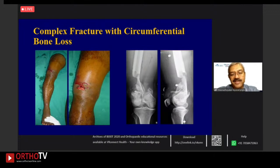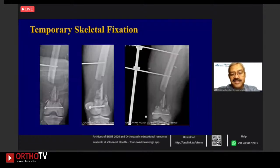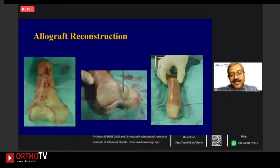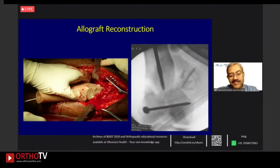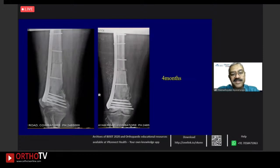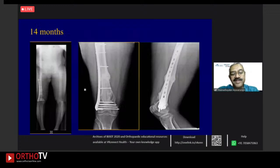For complex fractures with circumferential bone loss, especially with extensive crushing or contamination, do it in stages — first articular reconstruction, then secondary reconstruction. Take allograft, shape it, ream the intramedullary area of the allograft, put autograft inside, position it, and fix it well. At 4 months, callus forms all around; at 14 months, nicely incorporated. This autograft-allograft combination gives good function. In staged reconstruction, be cautious with extensive soft tissue crushing or severe contamination — otherwise do global reconstruction as early as possible.